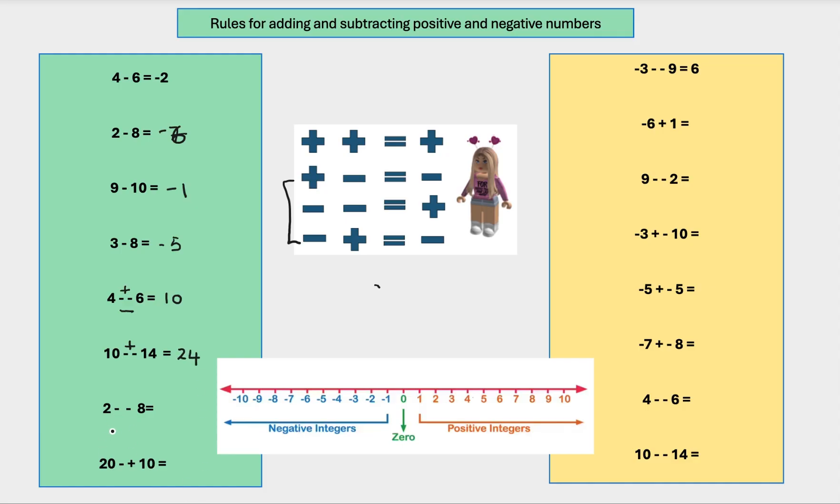Now we've got another one. 2 minus minus 8. Give you one second to work that out. So we know a negative and negative equals a plus. So the answer to this is 8 plus 2 is 10. So, you know, it's pretty easy when you remember, but you do need to practice.